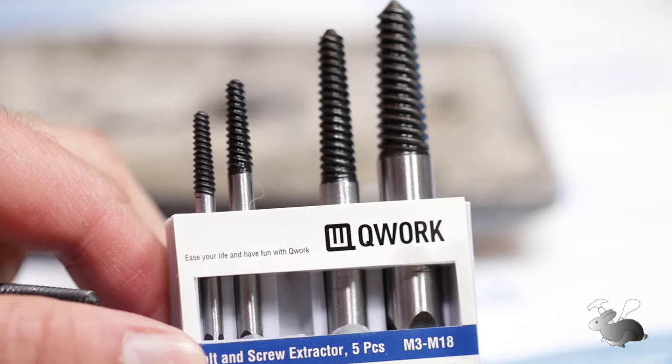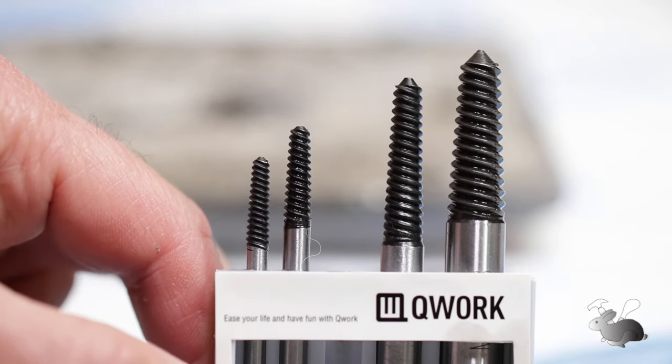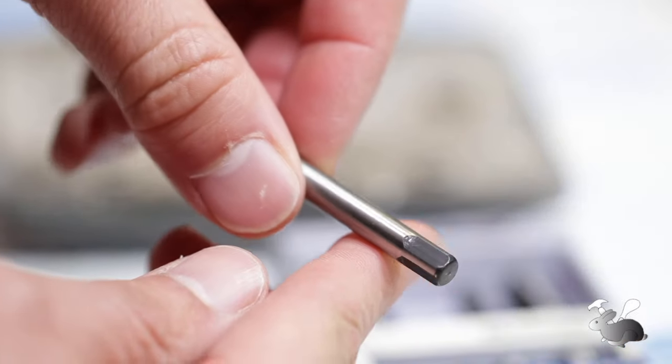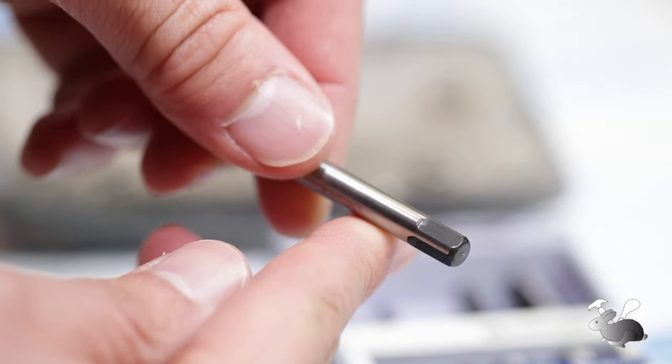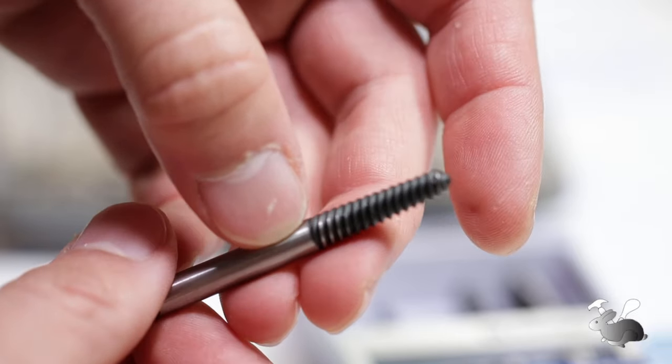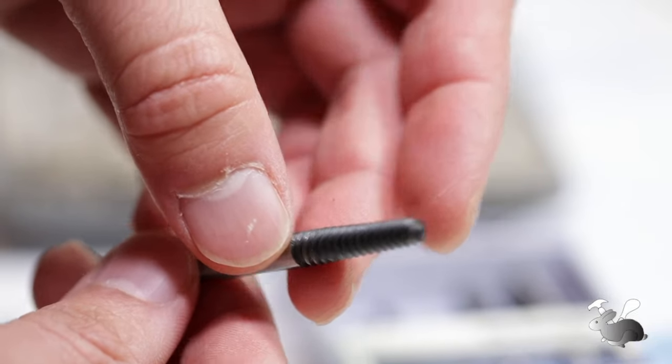This is the screw extractor set that I got from Amazon. It's made by Q-Work. Overall, this one stood out from the rest. It has a nice finish and sharp reverse threads, and looks well made overall.